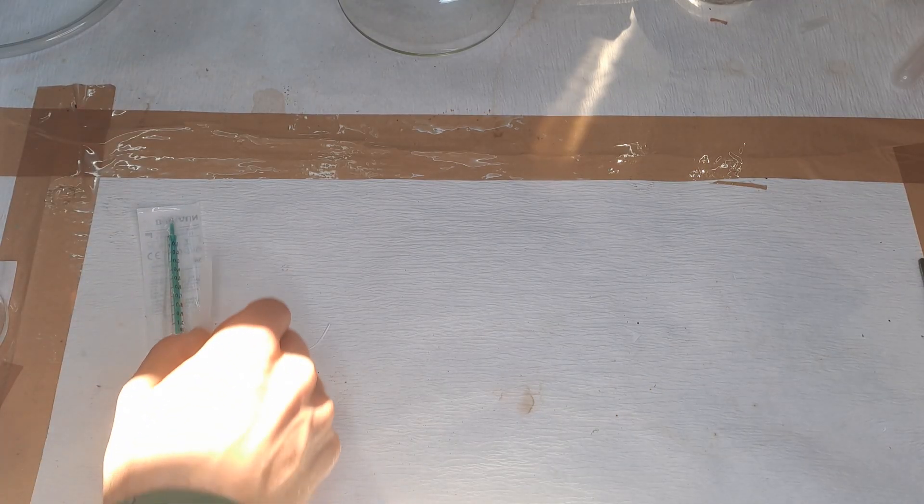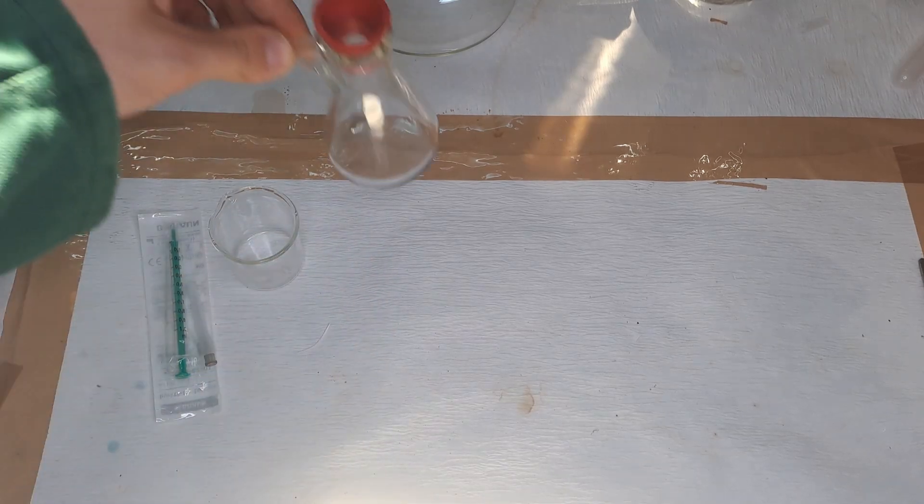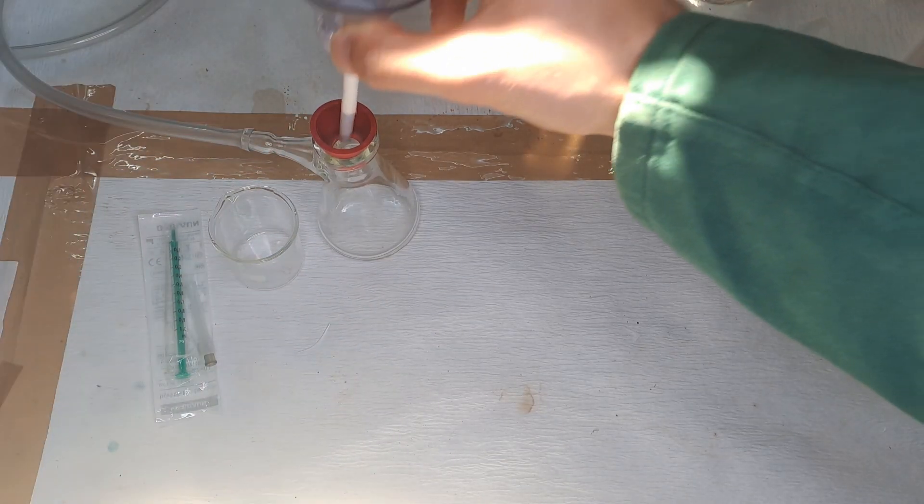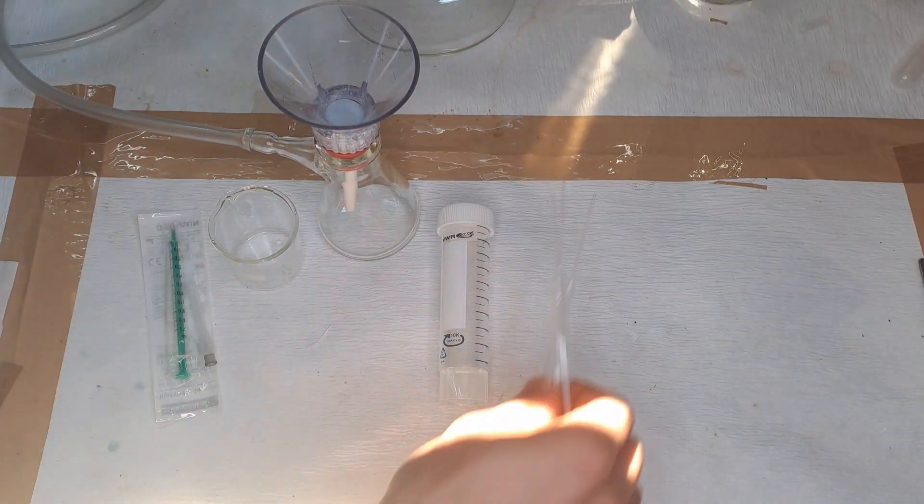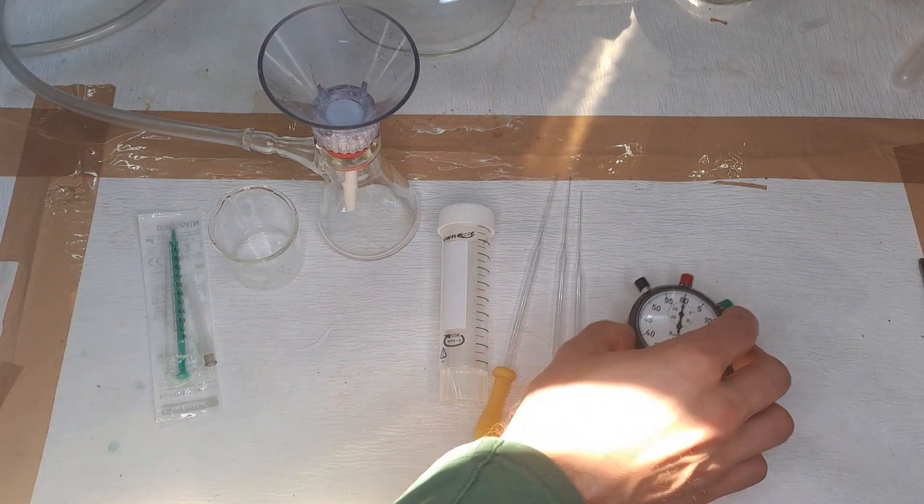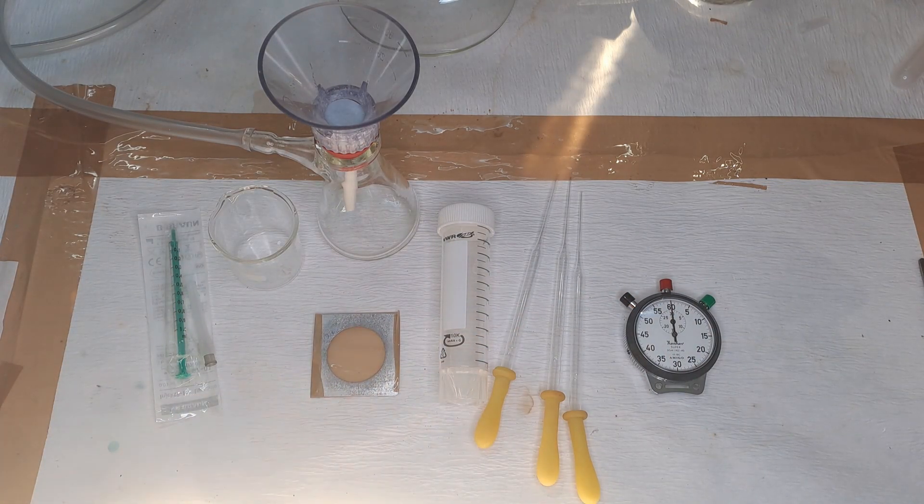Equipment needed: a syringe, a beaker, a Buchner funnel with a filter, a falcon tube for the stock solution, three pipettes, a stopwatch, a metal frame with tape, and a Geiger-Müller counter.